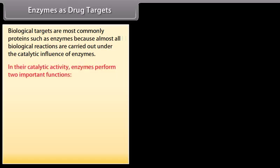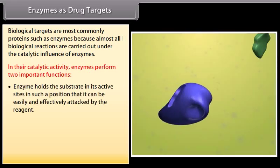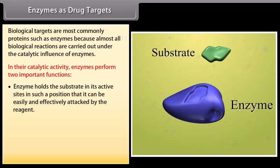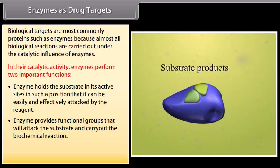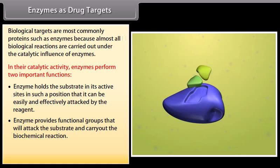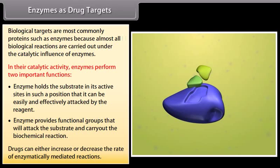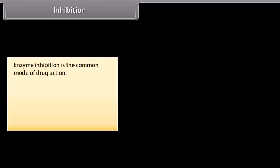In their catalytic activity, enzymes perform two important functions: they hold the substrate at their active sites so it can be effectively attacked by the reagent, and they provide functional groups that attack the substrate and carry out the biochemical reaction. Drugs can either increase or decrease the rate of enzymatically mediated reactions. Enzyme inhibition is the common mode of drug action.